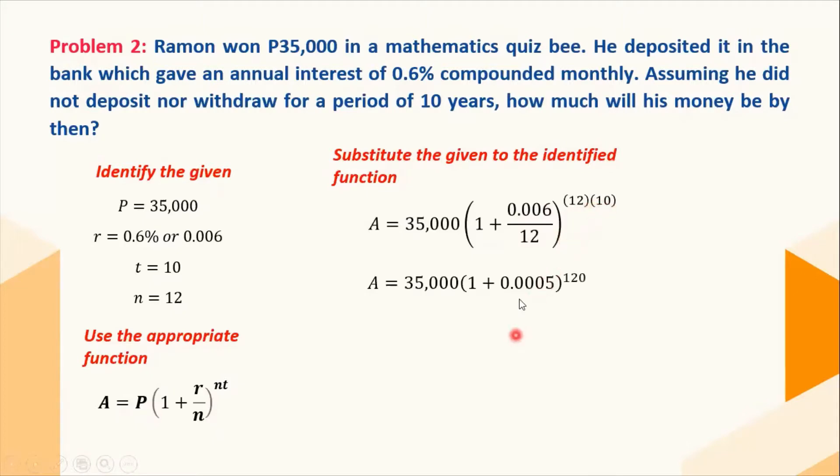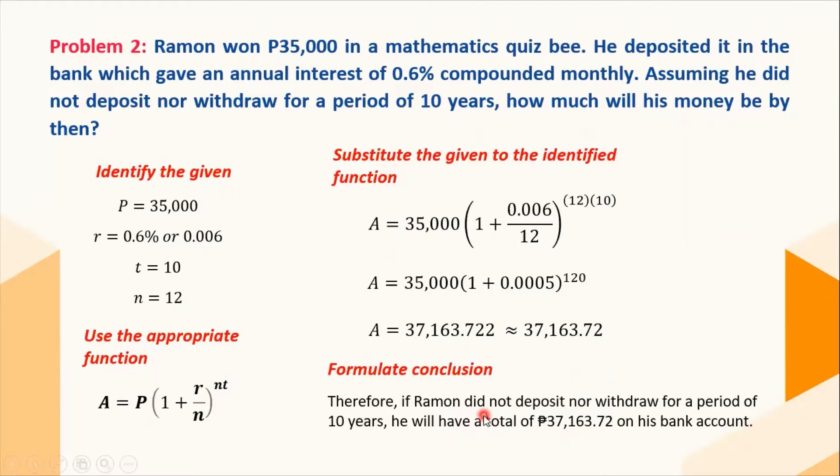I'll simplify this one and it will give us an answer of 37,163.72 pesos. We can now formulate a conclusion that if Ramon did not deposit nor withdraw for a period of 10 years, he will have a total of 37,163 pesos and 72 centavos on his bank account.